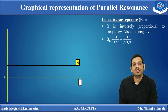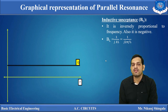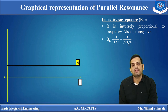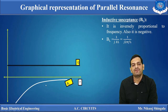Next is inductive susceptance. Susceptance is the reciprocal of reactance. Inductive susceptance BL = 1/(jXL) = 1/(j·2πFL). So BL is inversely proportional to frequency, and it is also negative. It is drawn in the lower quadrant. Initially, the value of BL is very high; as frequency increases, the value of BL decreases.